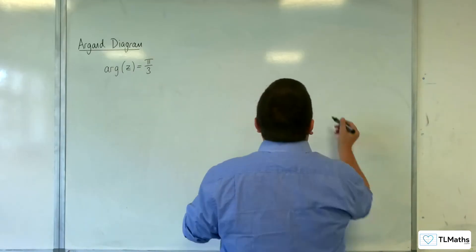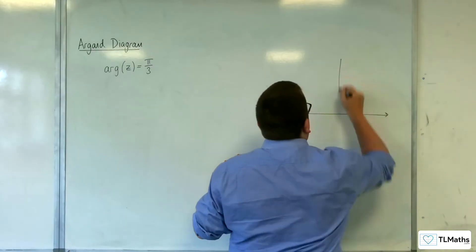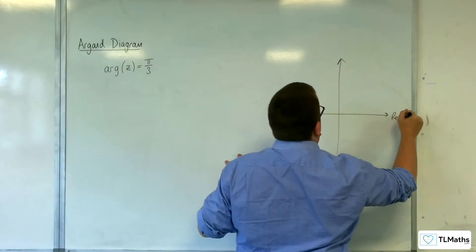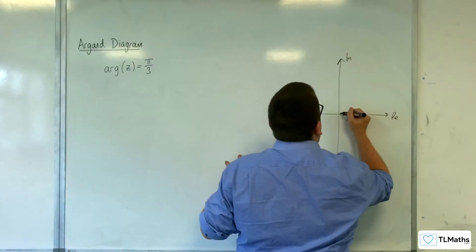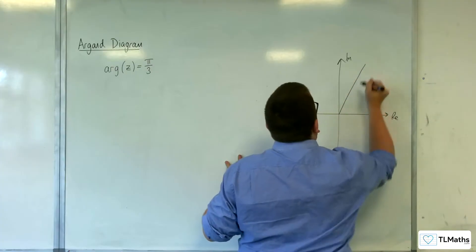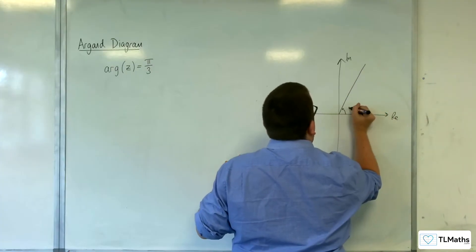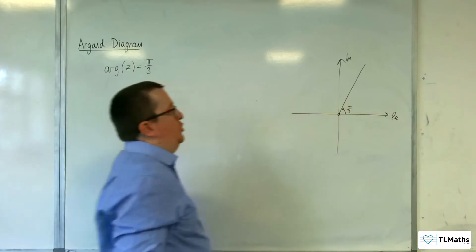So let's draw it. Real axis, imaginary axis, π/3, something like this. So that angle is π/3, and we're not including the origin.